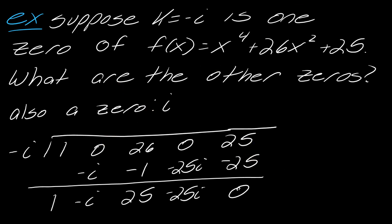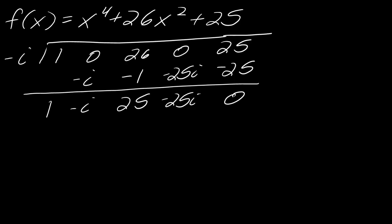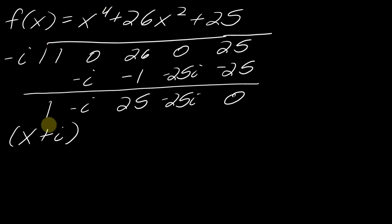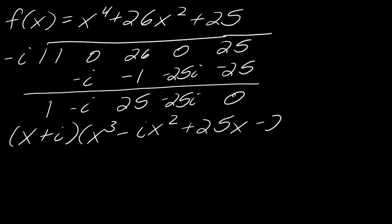Interpreting the result: x⁴ + 26x² + 25 factors as (x + i) times (x³ minus ix² + 25x minus 25i). Since we also know i is a zero, we now apply synthetic division to the cubic factor using i.